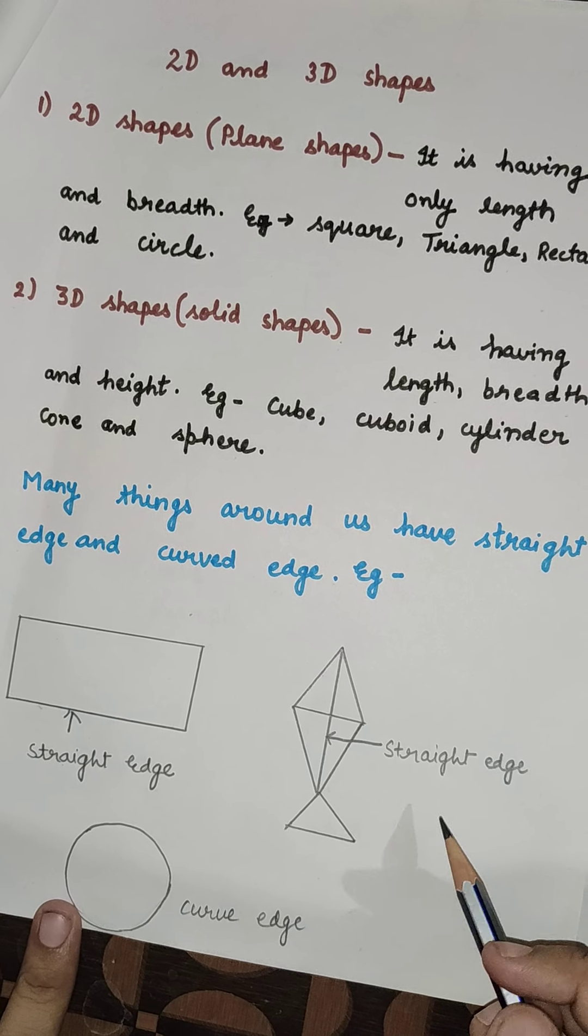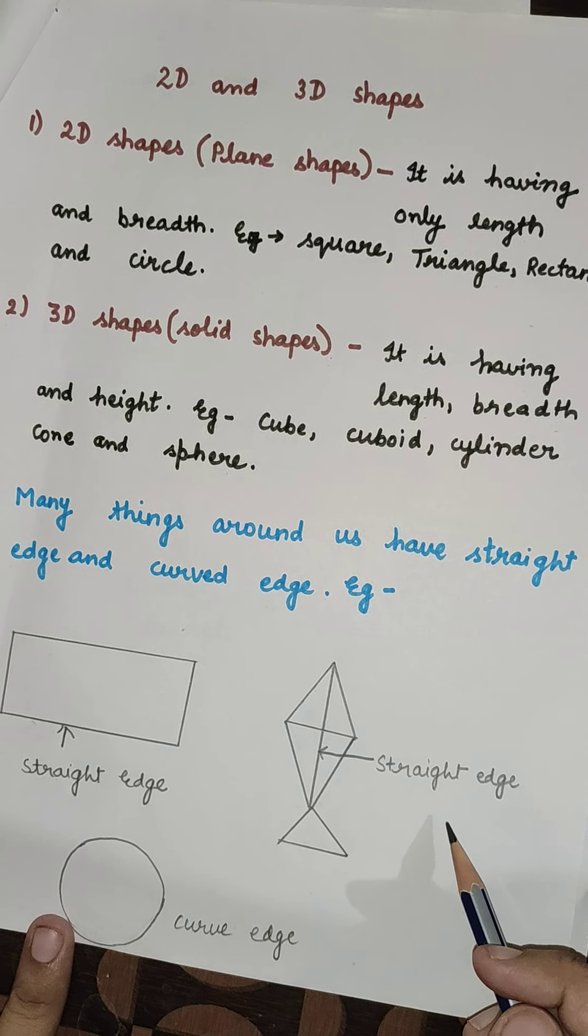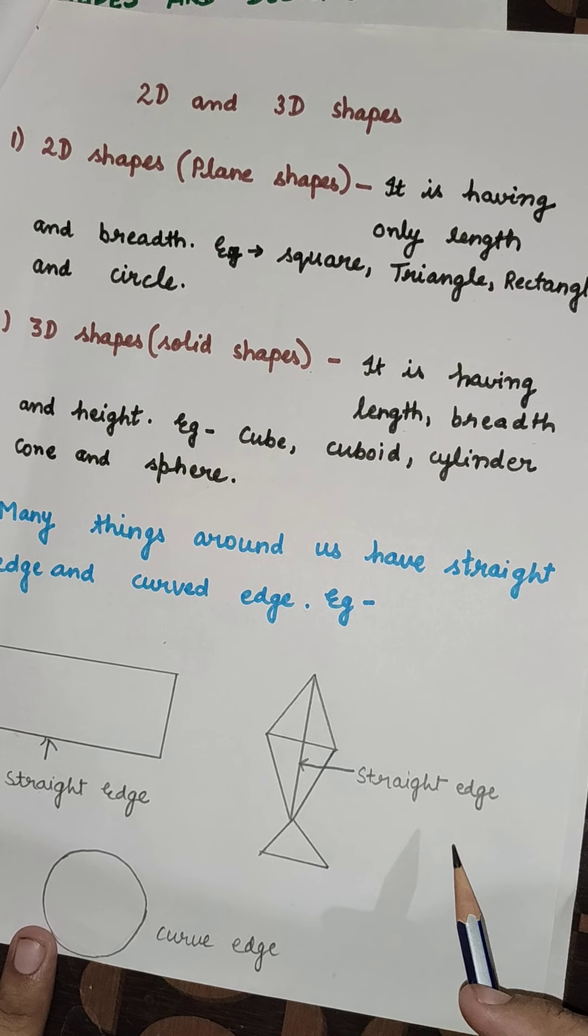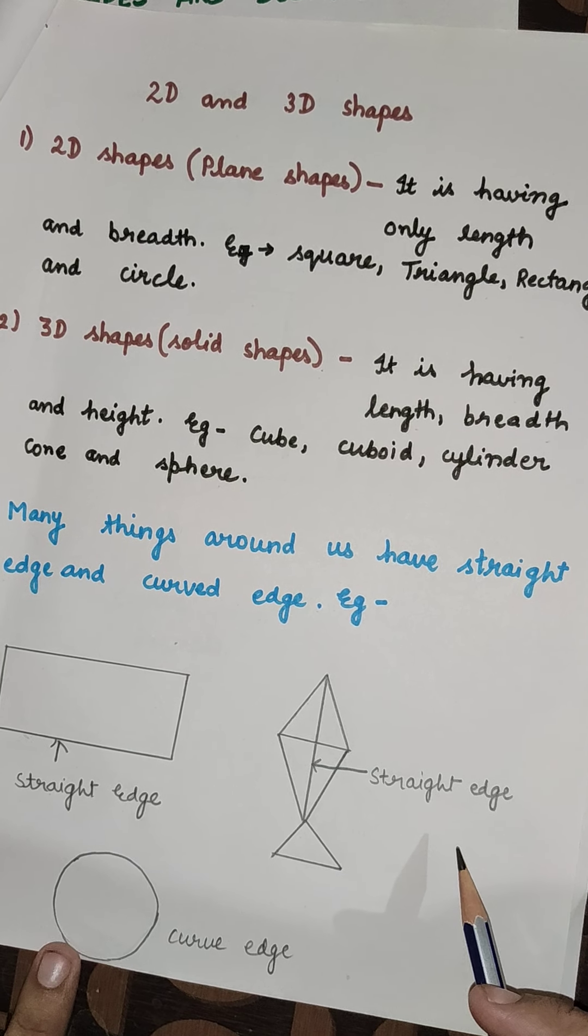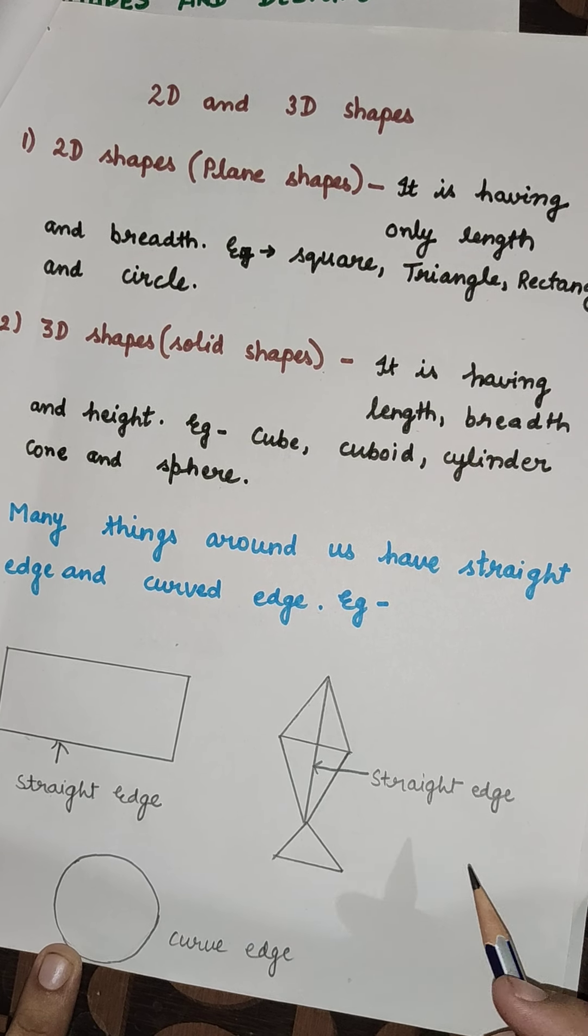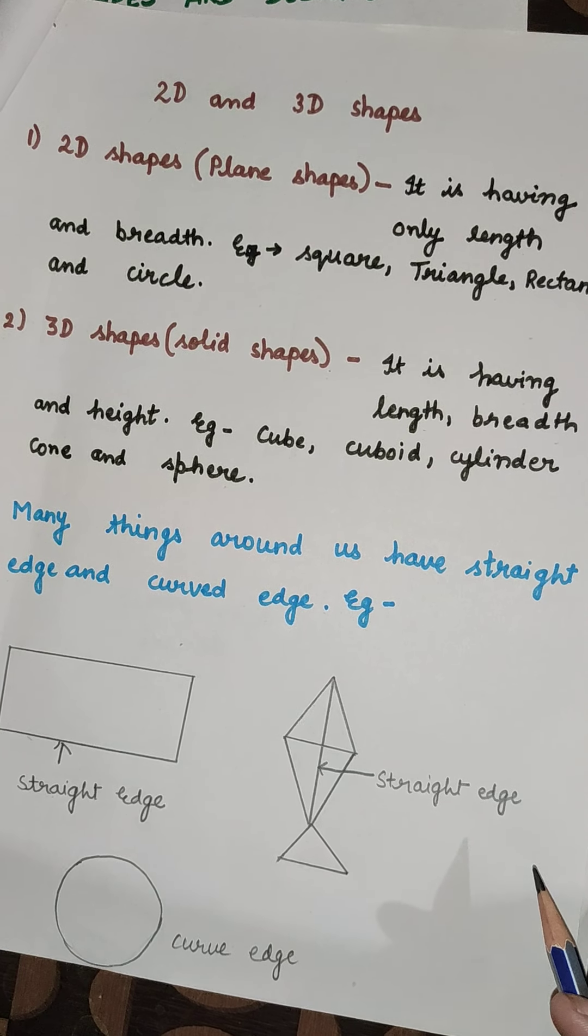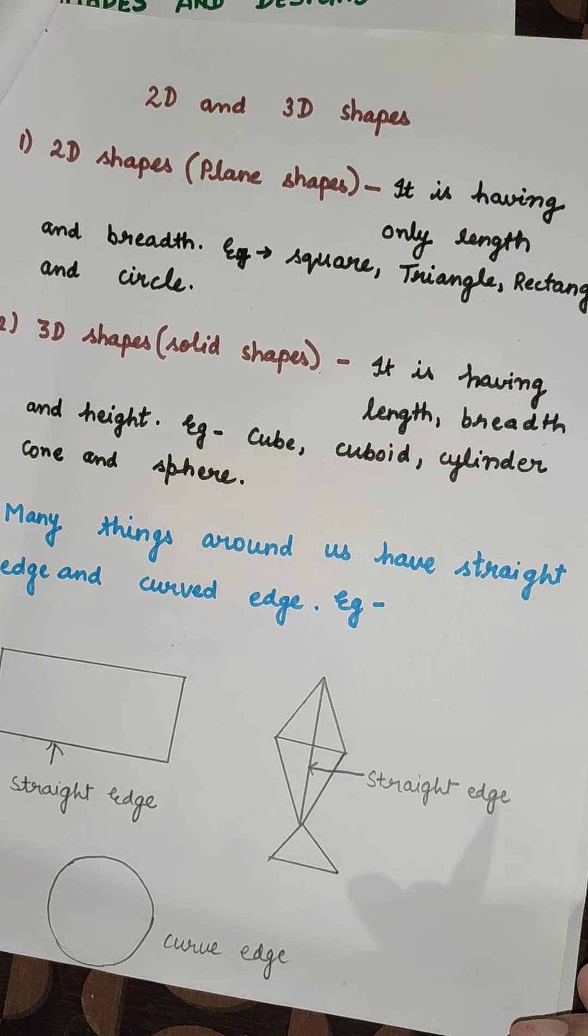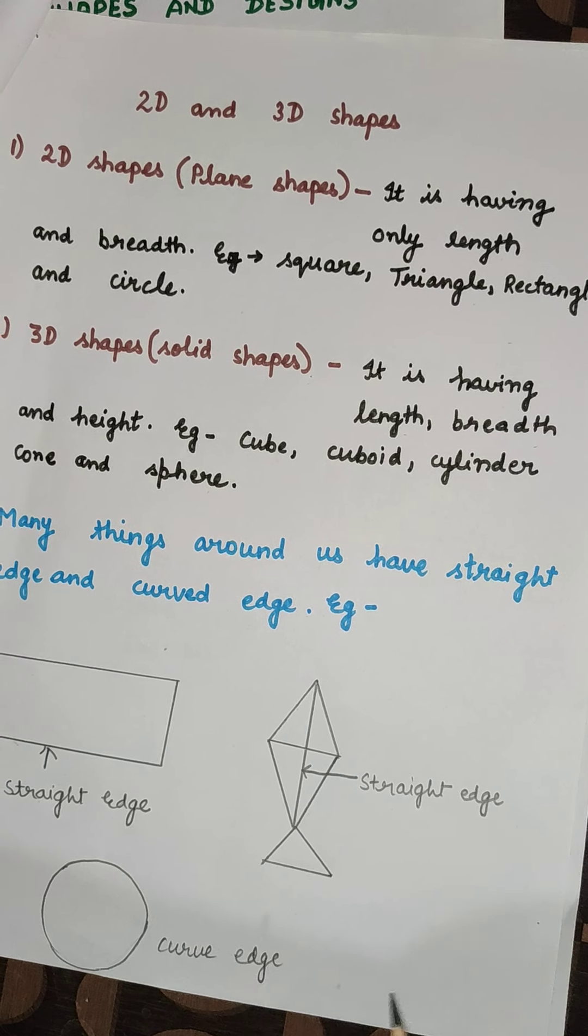So, what is a straight edge? Straight edge is a tool used for drawing lines or checking their straightness. If it has equally spaced markings along its length, it is actually called ruler.